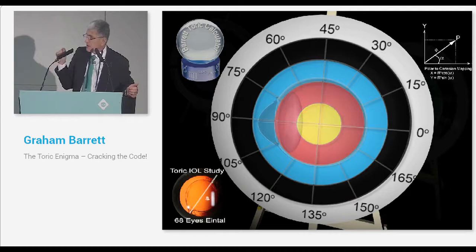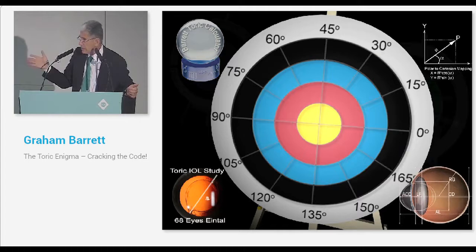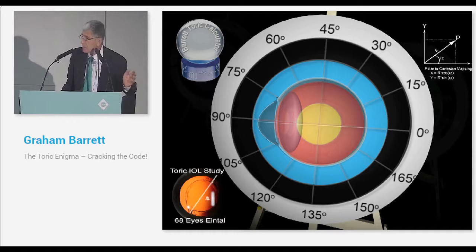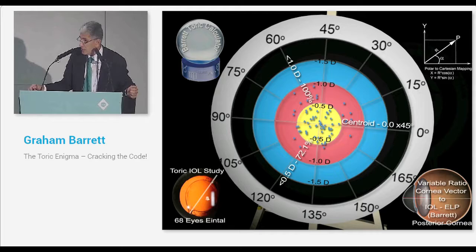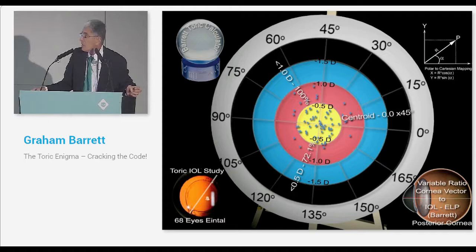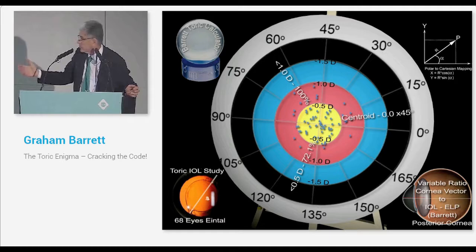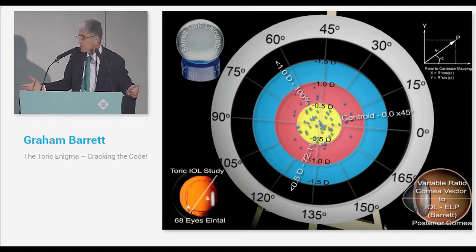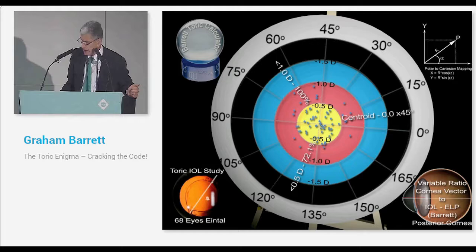So my own calculator, as I've explained, uses the Barrett Universal 2 formula to predict the ELP. It uses that in the calculation, but it also predicts a posterior corneal astigmatism. Using this calculator on the same set of patients, the centroid is essentially zero. And now 72% of patients are within a half diopter. This is not small incremental changes. This is a vast difference. 72% versus 35% of patients within a half diopter. We've submitted this data. It's been accepted for publication and hopefully will be published in JCRS shortly.